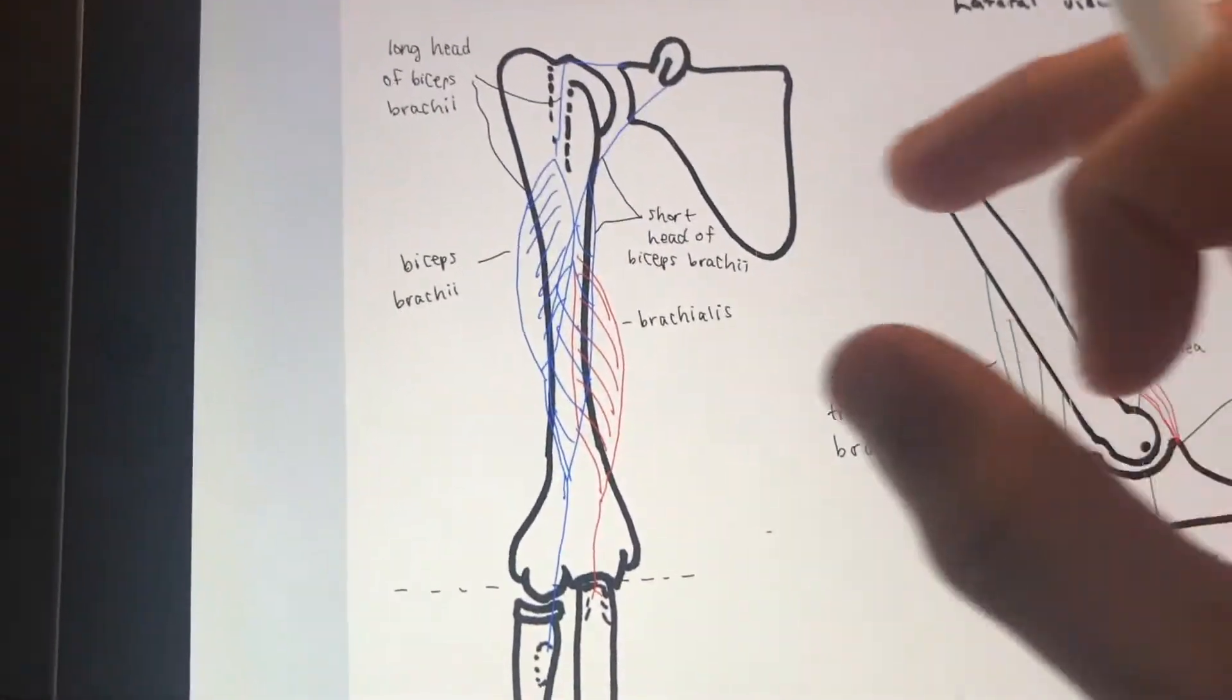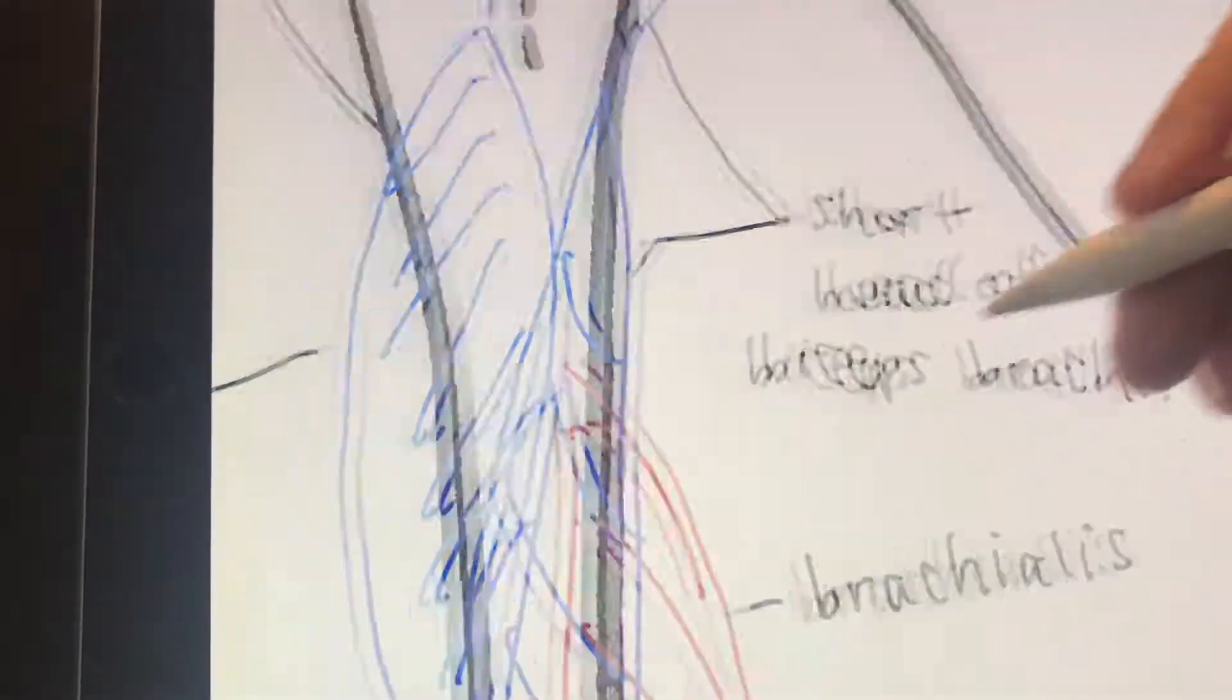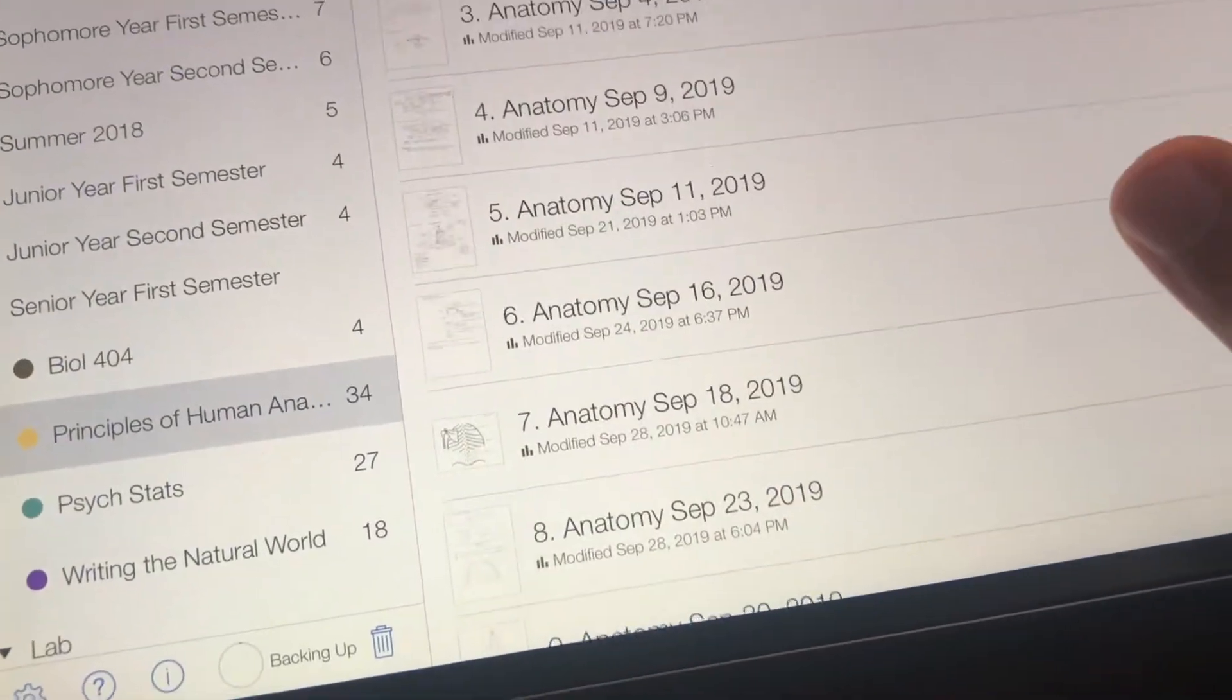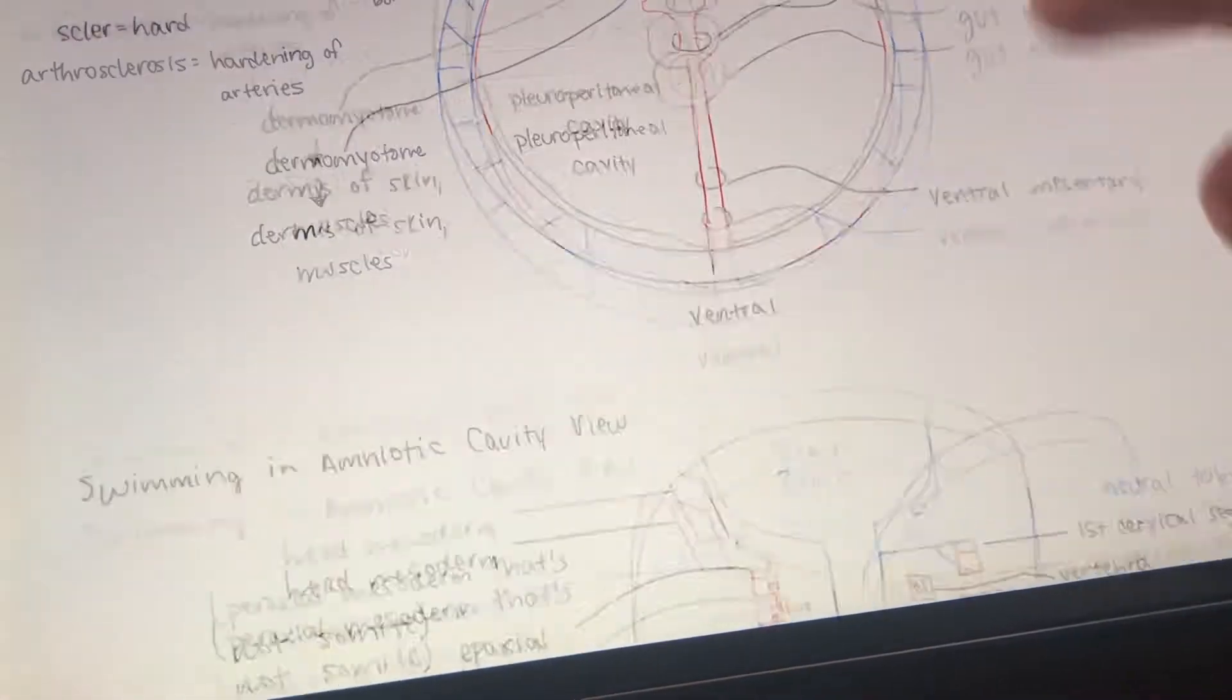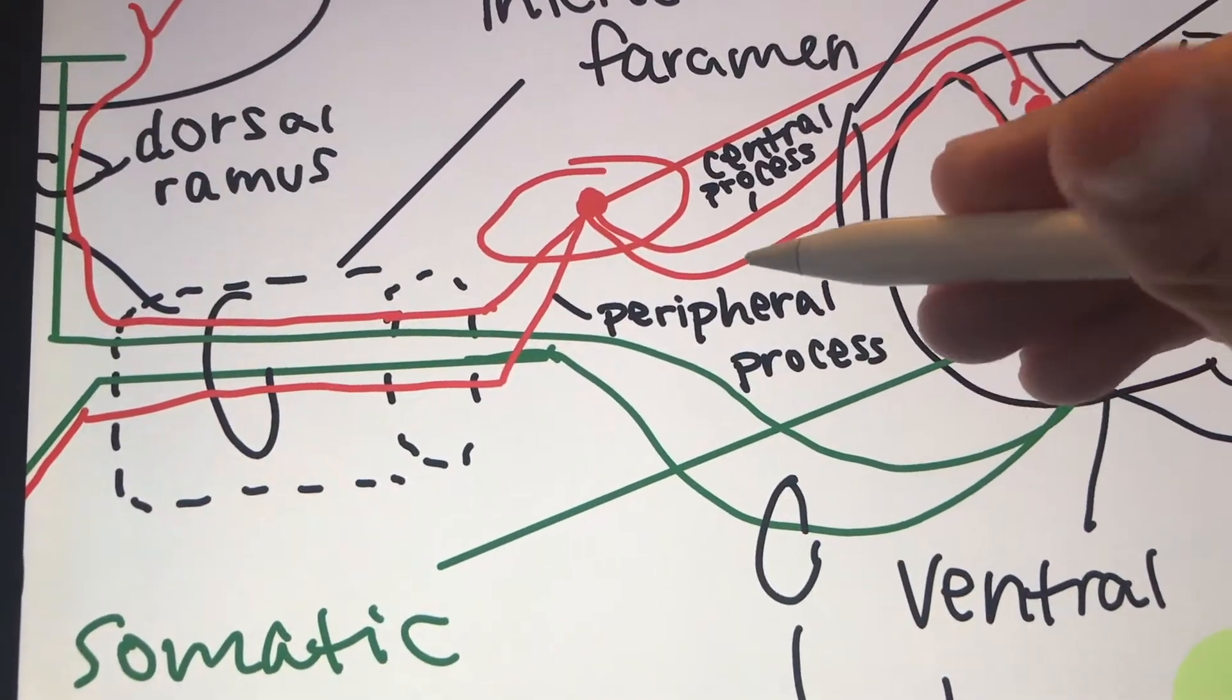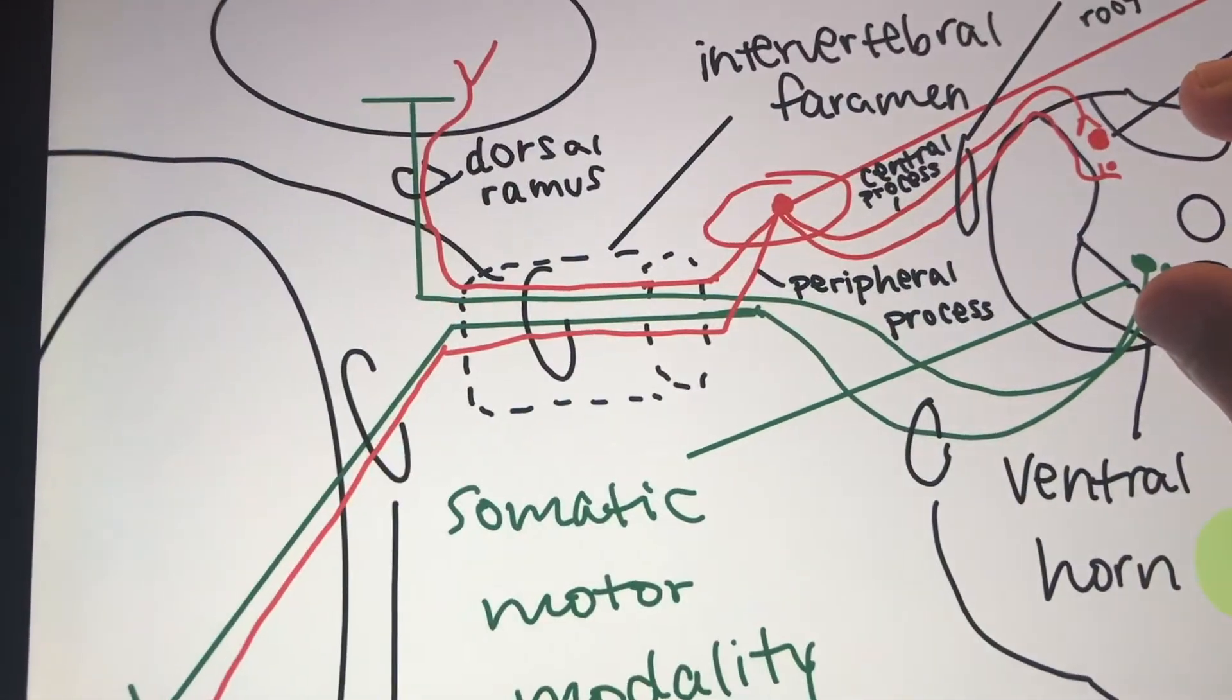Another thing that is really useful for this type of note-taking is that you can really zoom in and write smaller if you need to. It's kind of not really relevant here, but when we were doing the nervous system, it was kind of difficult to fit everything in one diagram here. So you can see that I had to zoom in here to write that this was the peripheral process and that this was the central process to make it easier for me to see.